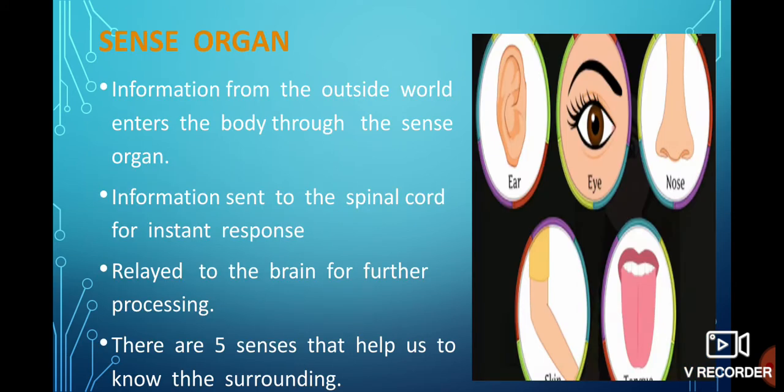Now comes your sense organ. Information from the outside world enters your body through the sense organ. Information sent to the spinal cord for instant response. Yes, because spinal cord is a part of your nervous system. Then it's that relay station. Relay means the connection maintained with the spinal cord to the brain for further processing. Because your brain needs to understand what kind of reaction, what kind of situation you are there.